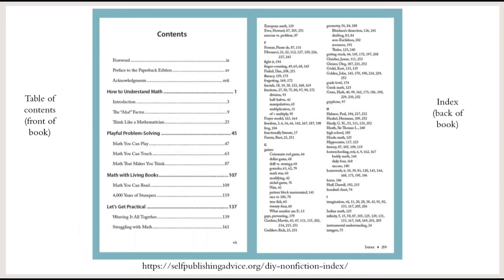As an example, here on the left we see a table of contents with the main chapter headings, then the subheadings underneath and the page numbers. On the right, we can see an index found at the back of the book, listing the topics, named people, ideas, concepts, events, etc., and the page numbers where they can be found.